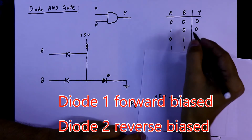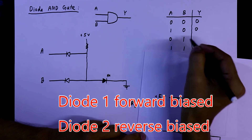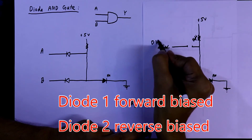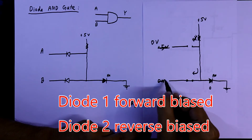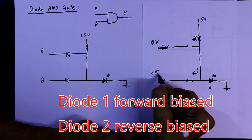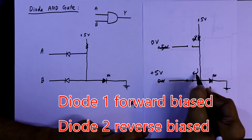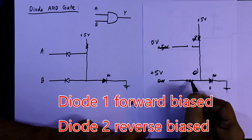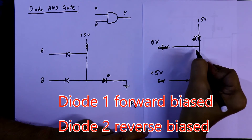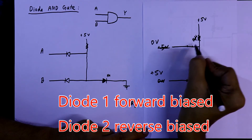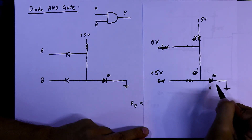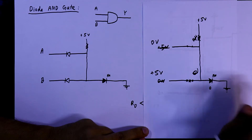For the third condition, it is just the opposite: diode A is now working as open circuit and diode B is working as closed circuit, but the output is still zero.